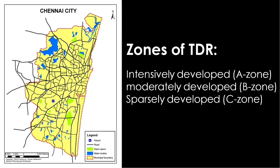Zones of TDR: Based on the intensity of development, the city is divided into zones — intensely developed as A zone, moderately developed as B zone, and sparsely developed as C zone. The transfer of development rights shall be from intensely developed zones to the other zones and not vice versa.